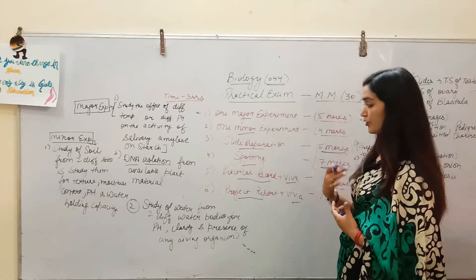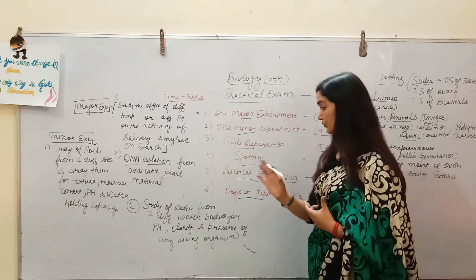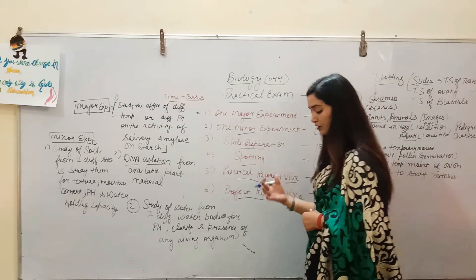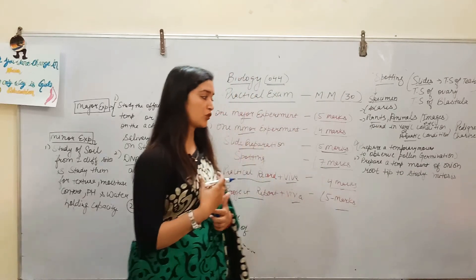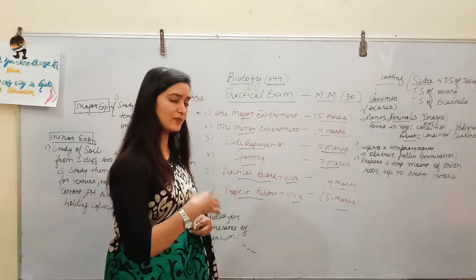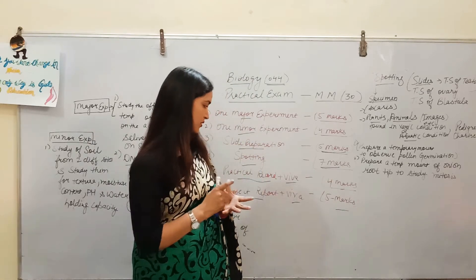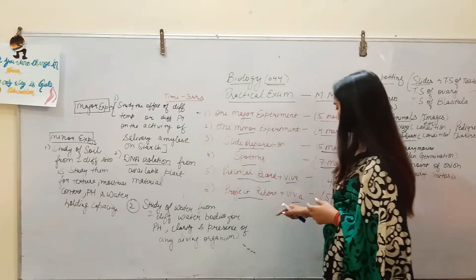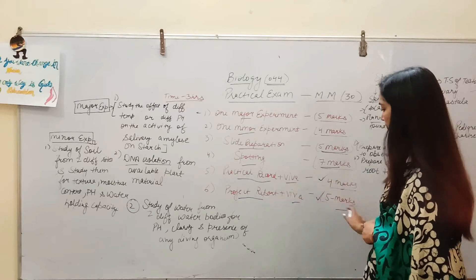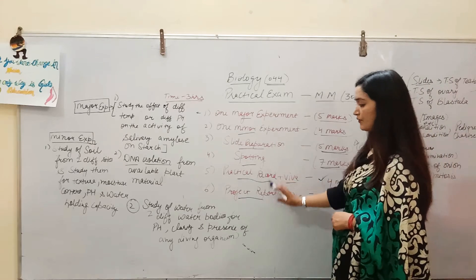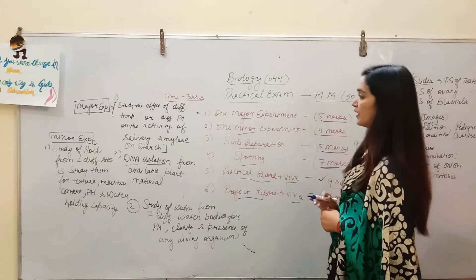For your project report, your teacher must have told you to take any topic from your syllabus — or outside it — and prepare a 5 to 7 page project report. You have to prepare viva for the same topic. The external teacher will ask questions from your project report, so prepare your project record thoroughly.